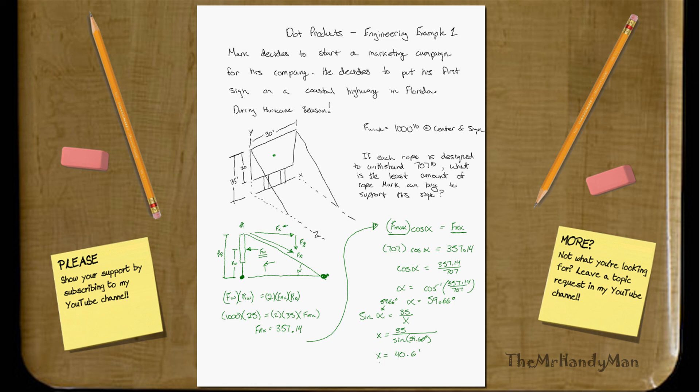Which, remember, you have two ropes, so times it by two. Mark should buy, essentially, eighty-one point two feet at the minimum.